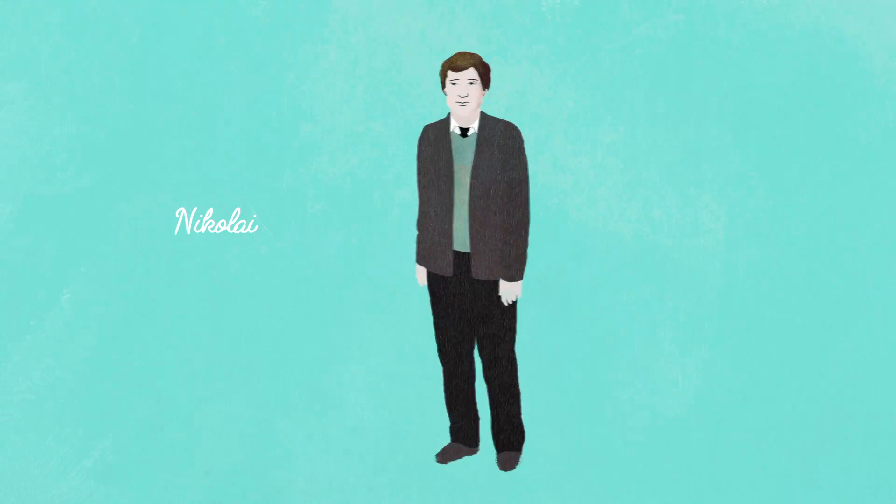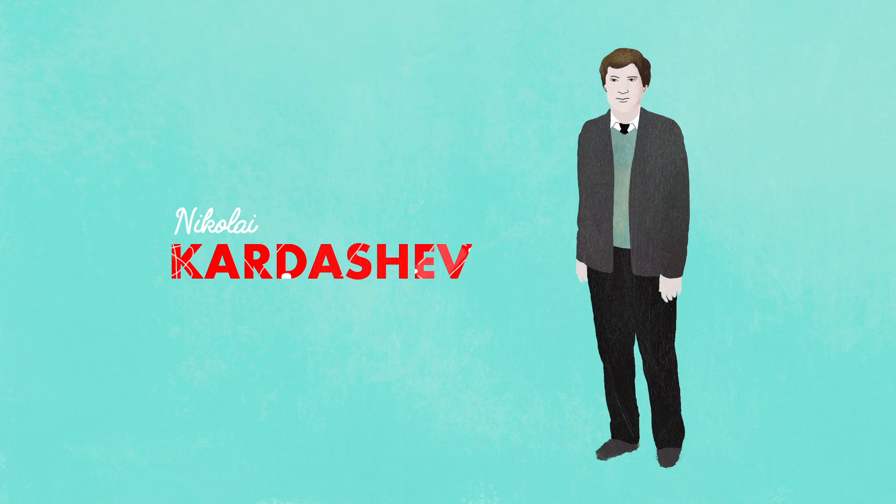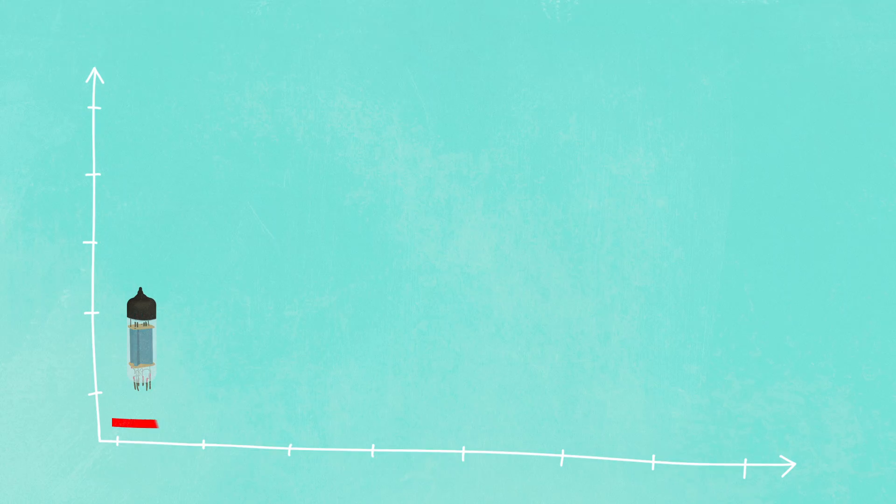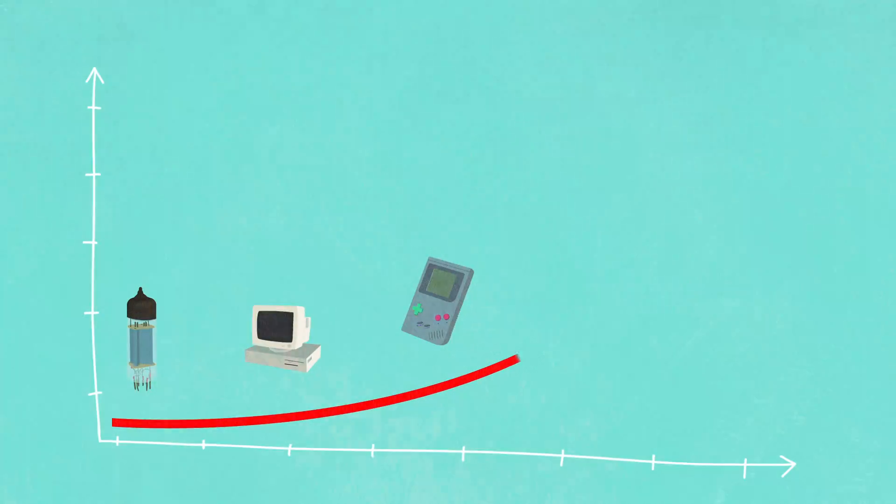Half a century ago, Russian astronomer Nikolai Kardashev was asking similar questions when he came up with a way to measure technological progress, even when we have no idea exactly what it might look like.